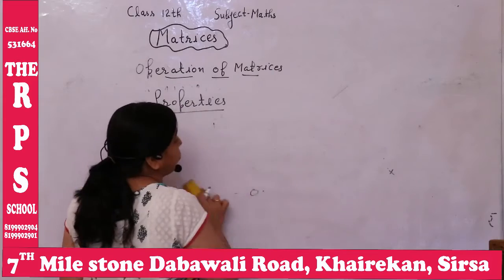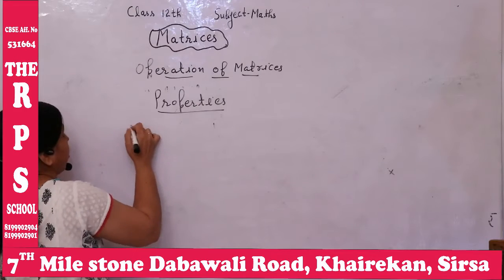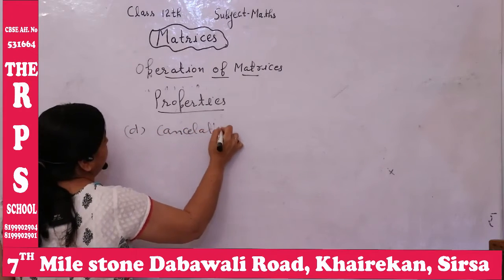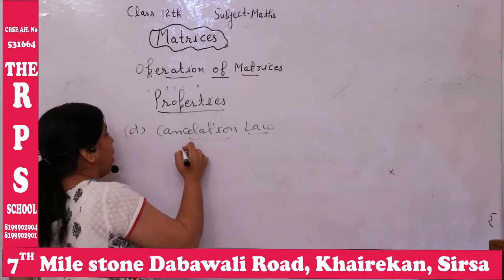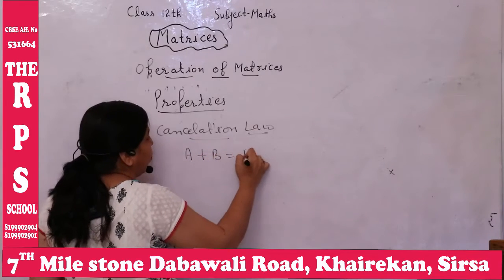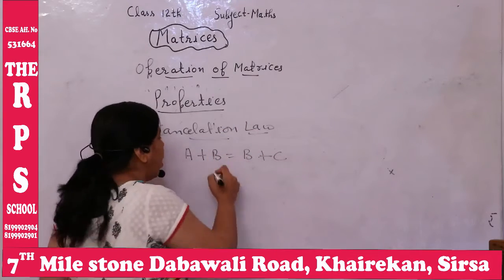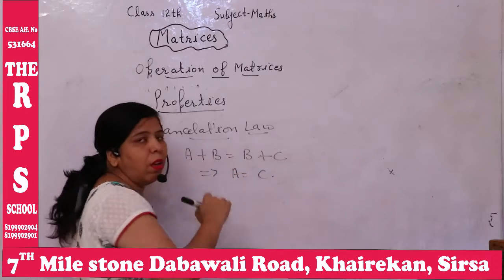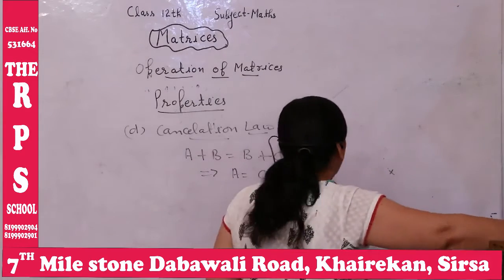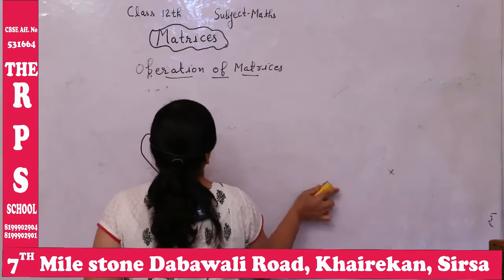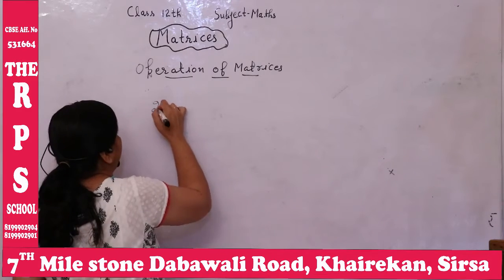Next is cancellation law. This means if A + B = B + C, then B cancels and this implies A = C. So addition also follows cancellation law. Next is the difference of matrices — the second operation after addition.